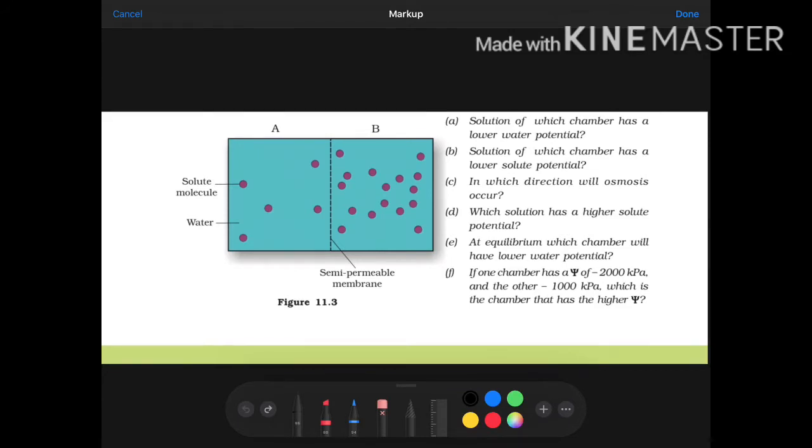Solution of which chamber has a lower water potential? So remember that more the chaotic energy of solute, less its water potential. Where the chaotic energy is more, the water potential will be less. Answer B.